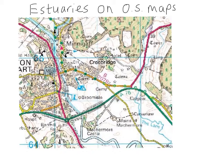This means that water can come up from the sea to this point here and then it goes back out again. So the point that the tide will reach is here, bounded by black lines.